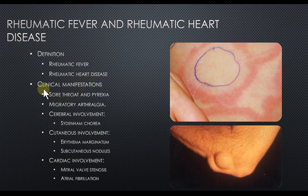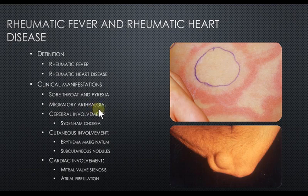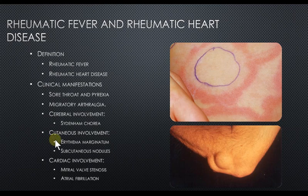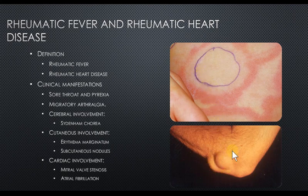Manifestations of rheumatic fever include sore throat and pyrexia, as well as migratory arthralgia — joint pain that moves from one joint to another. There may be cerebral involvement causing Sydenham's chorea, resulting in involuntary movements. Cutaneous involvement includes a characteristic rash known as erythema marginatum and subcutaneous nodules around the elbows.